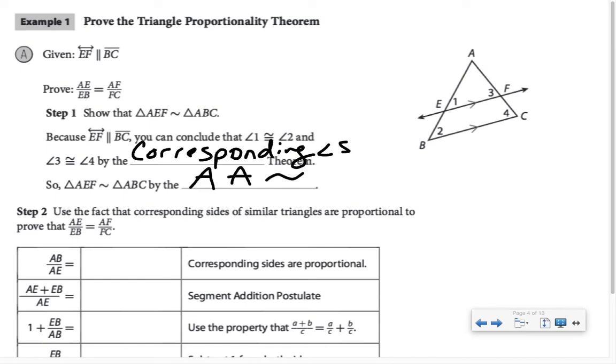Now we're going to use that corresponding sides of similar triangles are proportional to show that AE over EB equals AF over FC. So AB is to AE as AC is to AF. I know that AB is equivalent to AE plus EB. Similarly, AC is equivalent to AF plus FC, and I'm going to put that over the denominator AF.